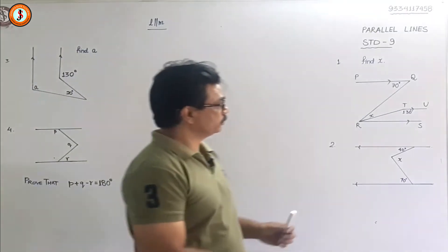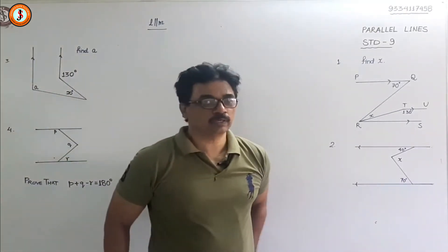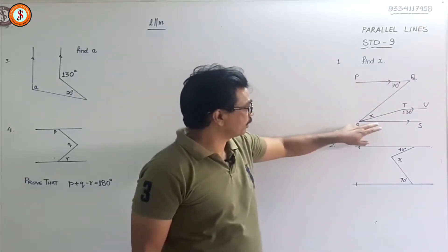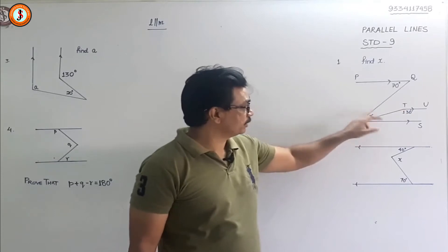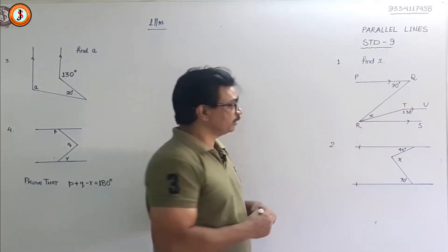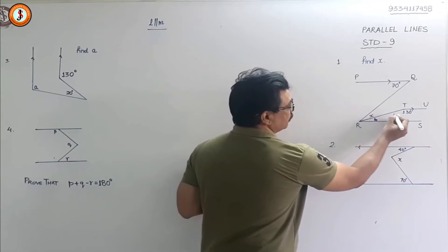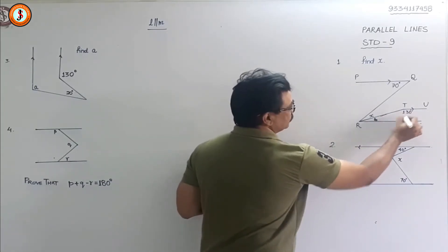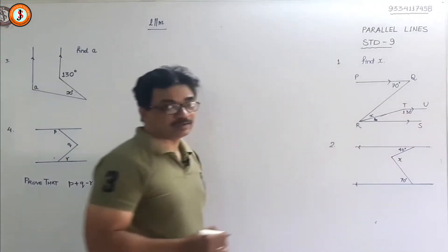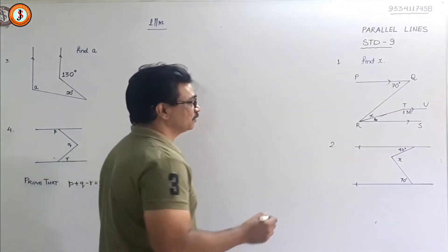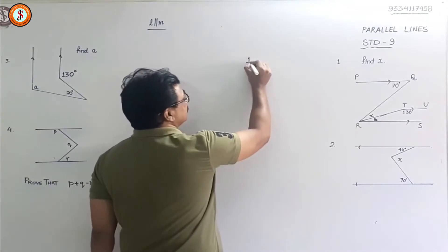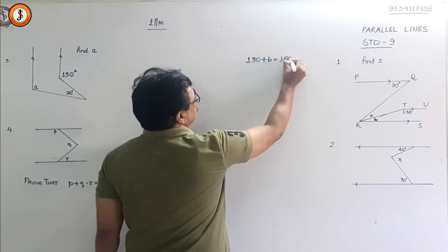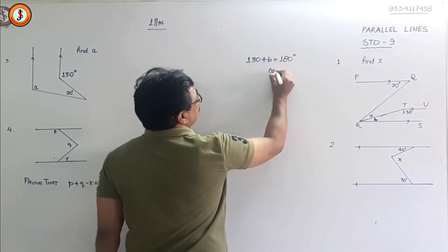We are going to do a few more sums on parallel lines. In this question, these two lines are parallel and these two lines are parallel. We have to get x. The technique here is I'll put this as b. Line TR is a transversal and these two lines are parallel, so the co-interior angles are supplementary. So we can write: 130 plus b is equal to 180.